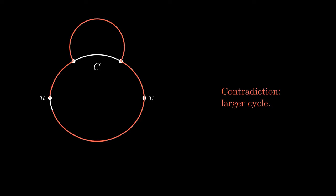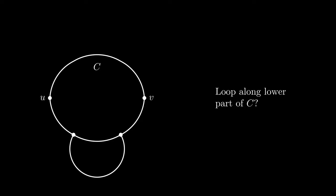We can't have any extra paths on the upper part of C since then there would be a cycle which contains more regions than C. The same goes for the lower part. This would mean that C is not what we said it is.